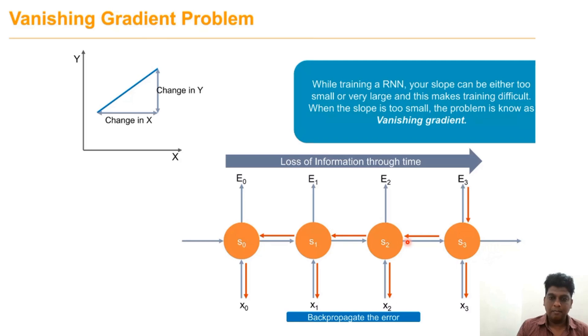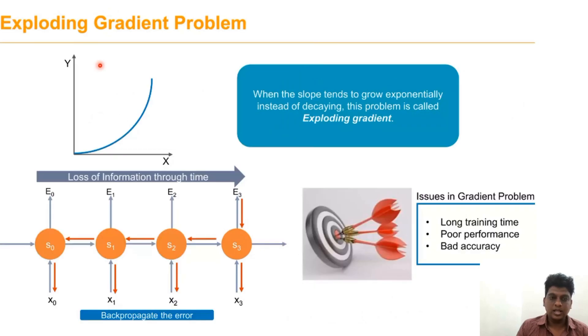When training backward, we can encounter this vanishing gradient problem. Another one is the exploding gradient problem, when the slope tends to grow exponentially.